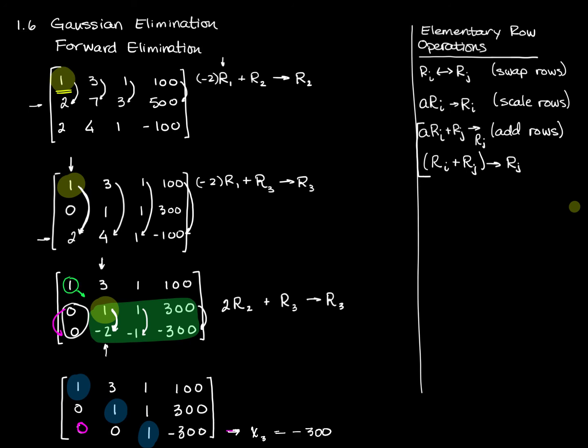And since I know that, and since I know that x2 plus x3 equals 300, but x3 equals negative 300, add 300 to both sides, and you get x2 equals 600. And since x2 equals 600, I can write x1 plus 3 times x2 plus x3 equals 100.